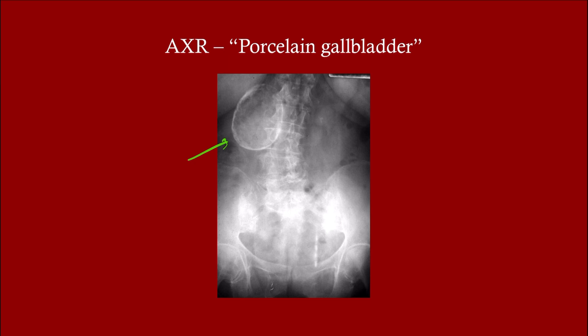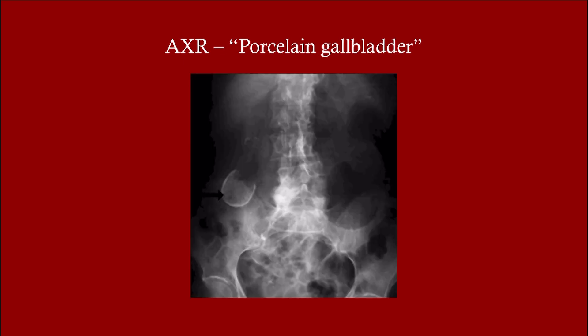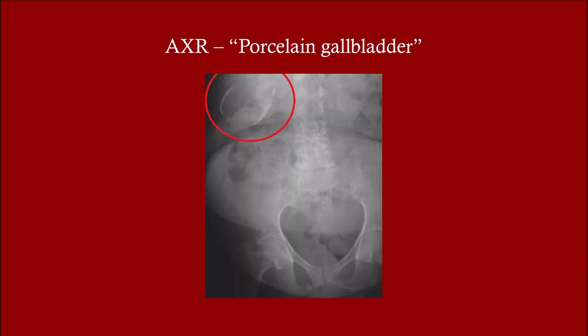Here's the porcelain gallbladder — this is calcification of the gallbladder wall. If this ever happens you have to take the gallbladder out. So if you did an abdominal X-ray for something like a bowel obstruction and you saw calcification of the gallbladder wall like this, you must take the gallbladder out after you treat whatever is going on. These patients need to be sent for gallbladder removal, and you're going to biopsy anything that looks suspicious.